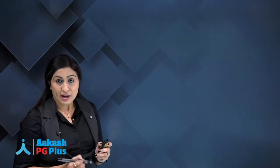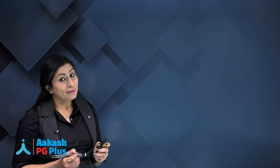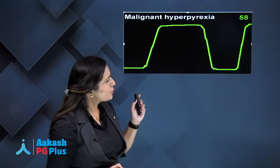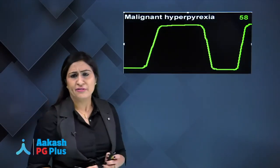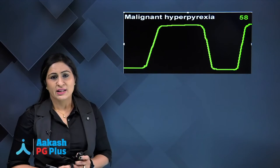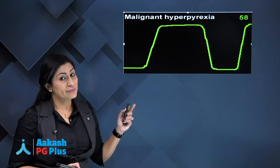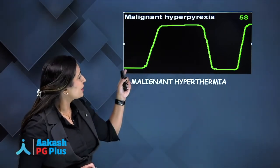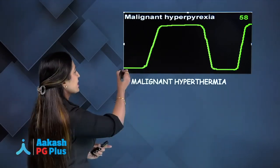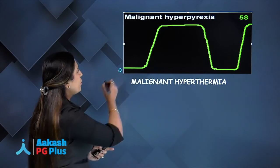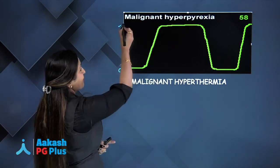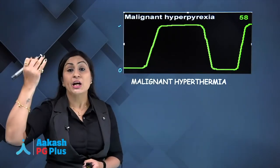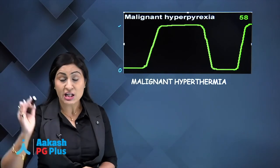Phase 4, or the end-tidal CO2, is the PCO2 just before inspiration begins. With that knowledge, we can make diagnoses from capnograms. A very high CO2 reading — not just 58, it could be 80 or 90 — should raise high suspicion of malignant hyperthermia.